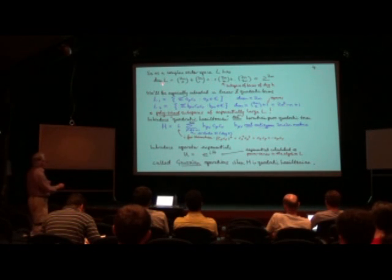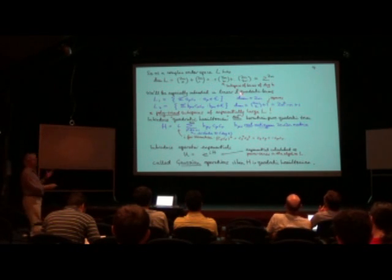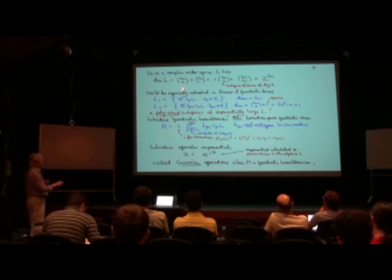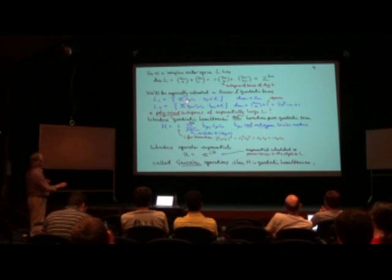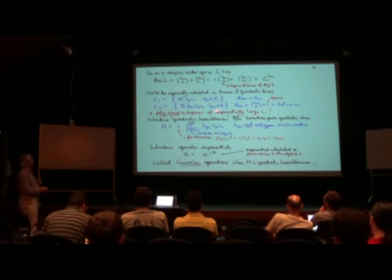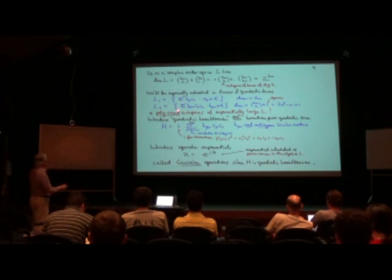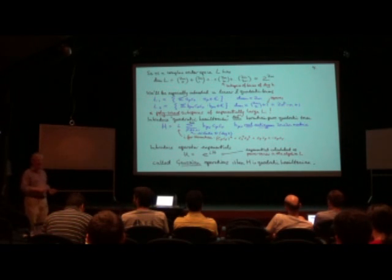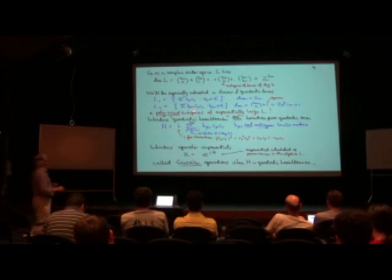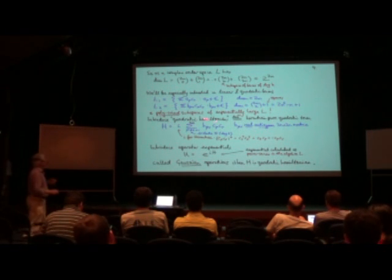The algebra L has dimension 2^(2n) and naturally breaks into subspaces of homogeneously fixed degree. We're especially interested in the linear subspace — all linear combinations of the c's — and the quadratic ones. Both are polynomially sized dimensions. They're polynomially sized subspaces in an ambient exponentially big world, which is nice for complexity considerations. Next, we introduce a so-called quadratic Hamiltonian, which is nothing more than a pure quadratic element of L2. We call it a Hamiltonian because we want it to be Hermitian — sticking an i in front of the quadratic product makes it Hermitian, since the c's are Hermitian but their quadratic products are not.